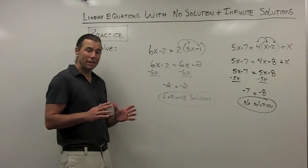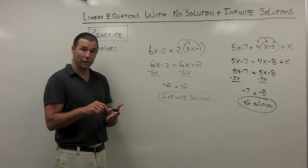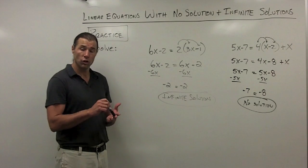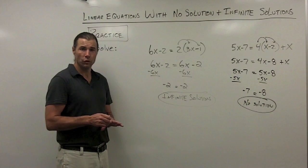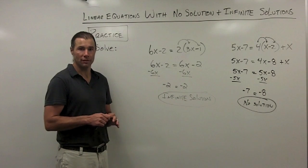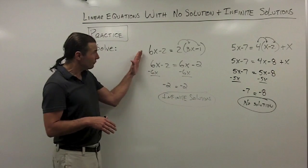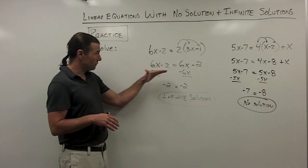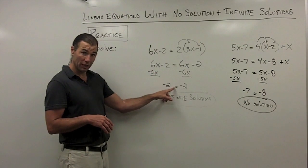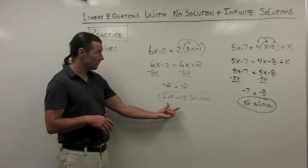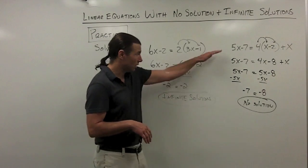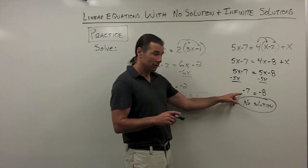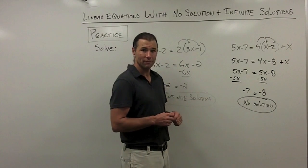To recap: the equations you'll encounter have either one solution, no solution, or infinite solutions. One solution — you're comfortable with that, you see it most of the time. Infinite solutions — variables drop out, you're left with a true statement. No solution — variables drop out, you're left with an untrue statement.